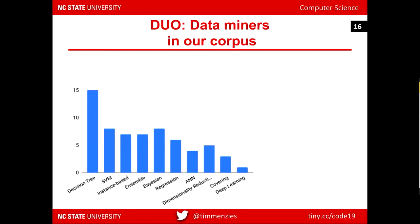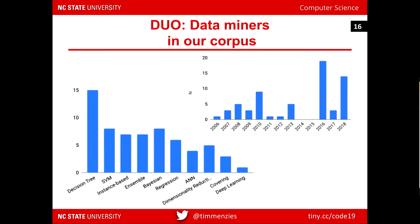In this corpus, we find learners like decision tree learners, support vector machines, instance methods, ensemble methods, Bayesians, regressions, neural networks, dimensionality reduction methods, and very rarely deep learning — because deep learning is computationally expensive and I like doing things much faster than that. Looking at when these papers were published, I see the overall number of papers increasing in this particular area.